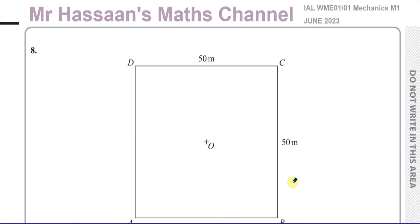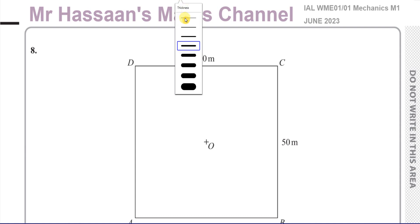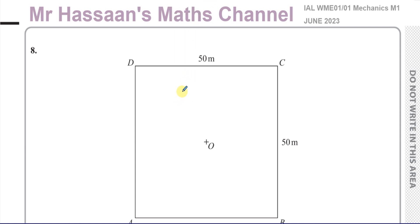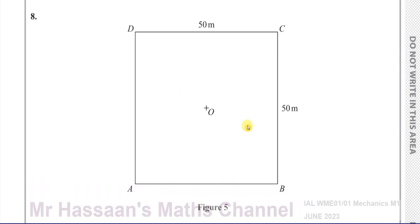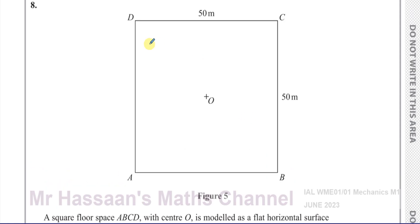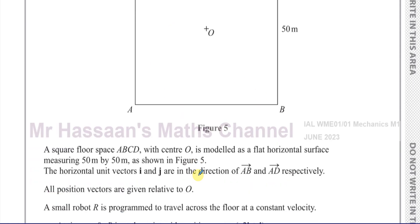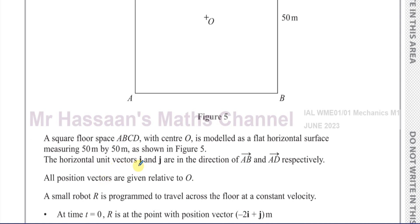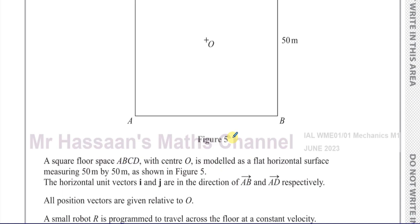Welcome back, this is Mr. Hassan's Maths Channel and I'm now answering a question from the June 2023 International A-Level Edexcel Mechanics M1 exam. This is question number 8, which is about vectors. We're told about a square floor space ABCD with center O, modeled as a flat horizontal surface measuring 50 by 50 meters as shown in figure 5. The horizontal unit vectors i and j are in the direction of AB and AD respectively.